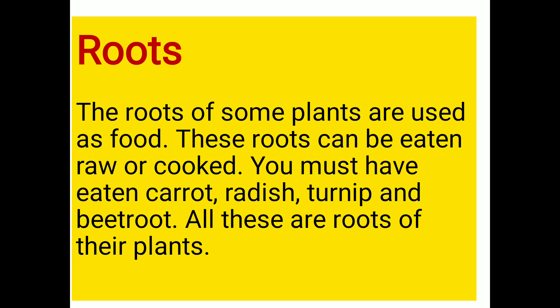Now come to the roots. So first we had seeds, then leaves, then stem, and now roots. Roots of the plant are also very important and are used as food. Some roots can be eaten raw and some can be eaten cooked. You must have eaten carrot, radish, turnip and beetroot — all these are the roots of the plant and are examples of edible roots used as vegetables.